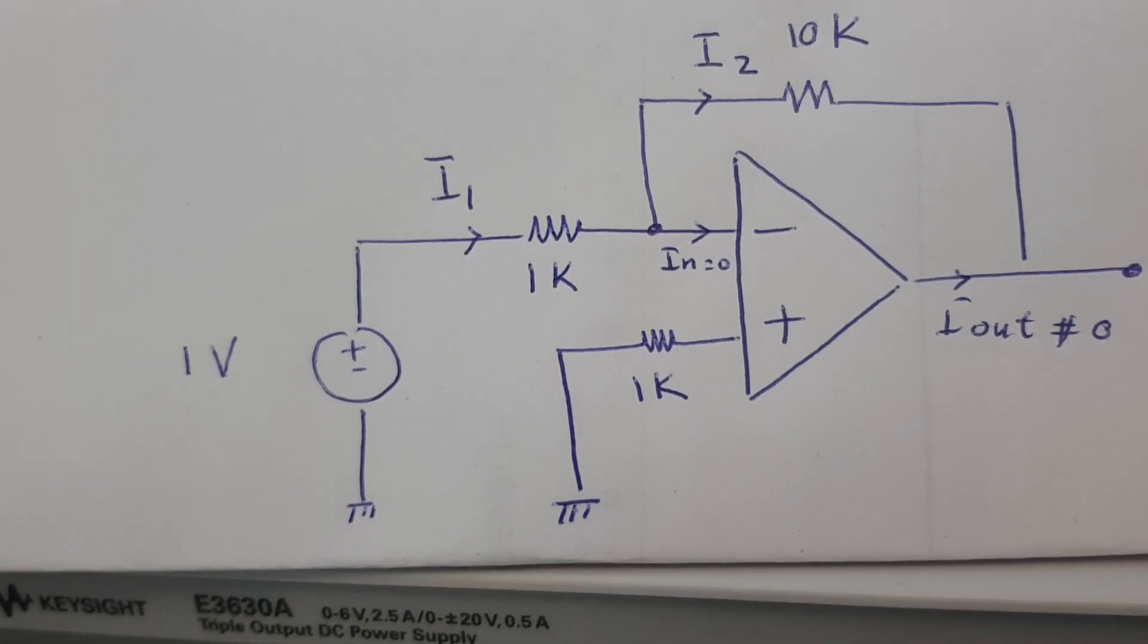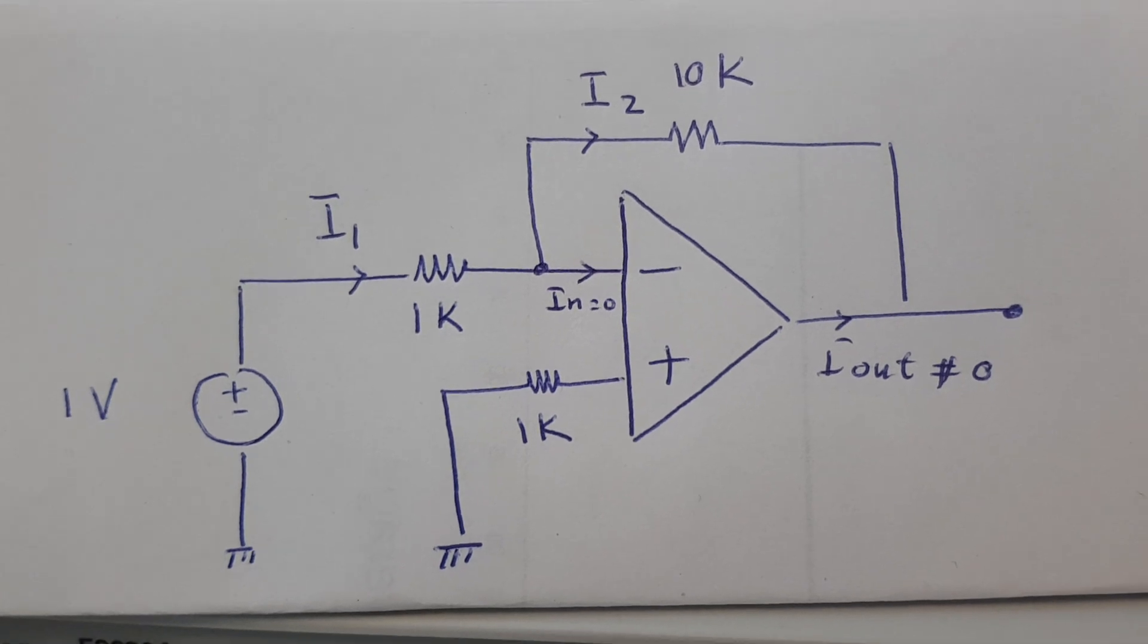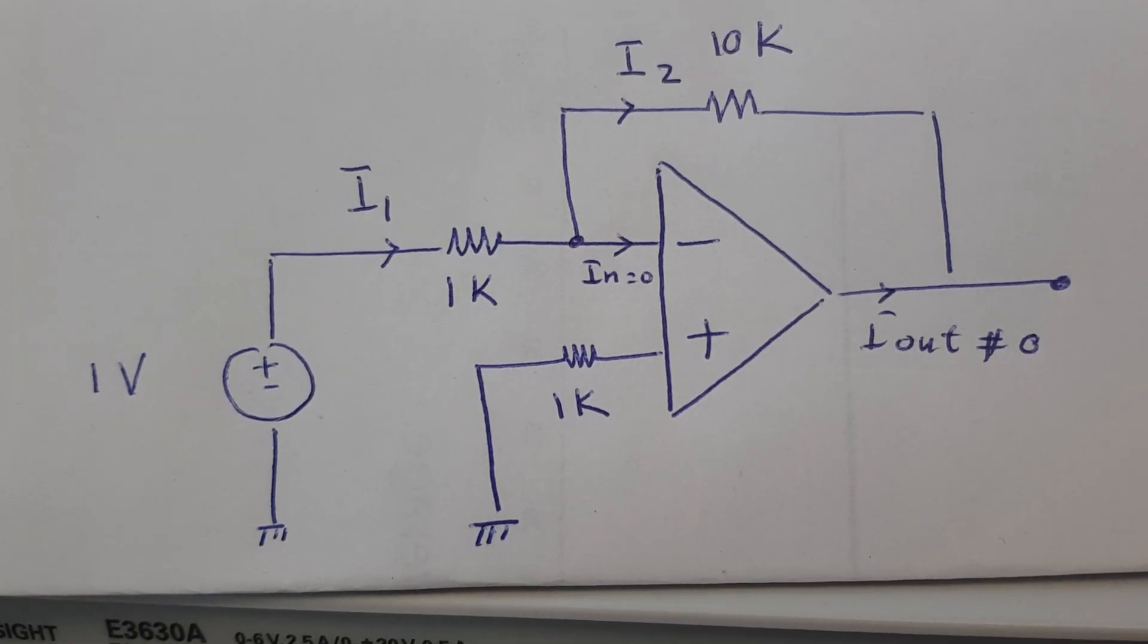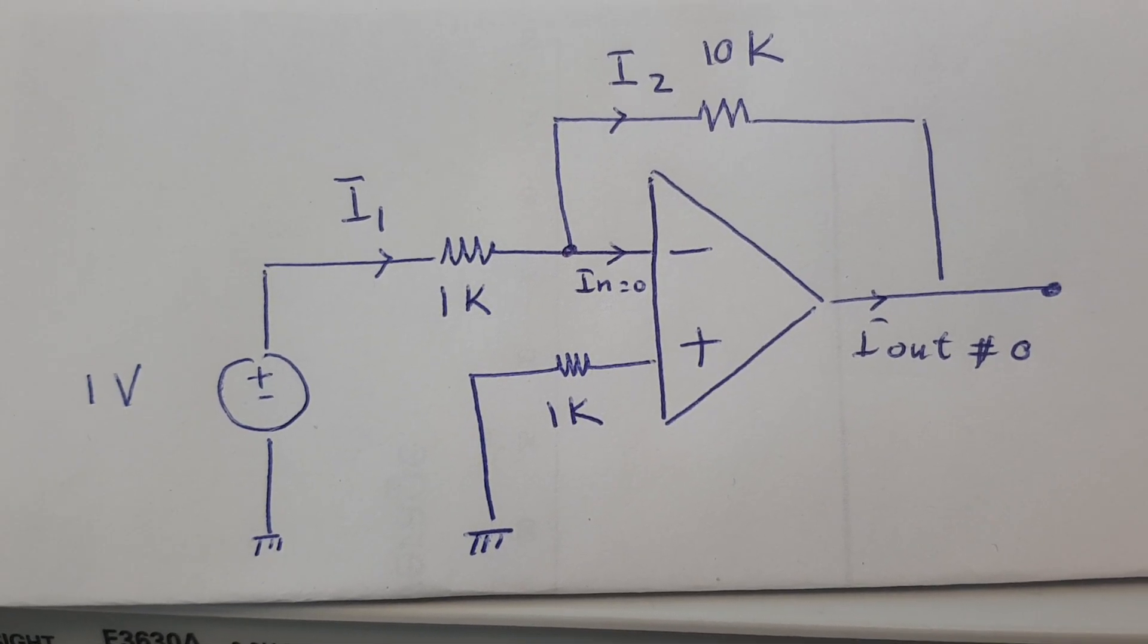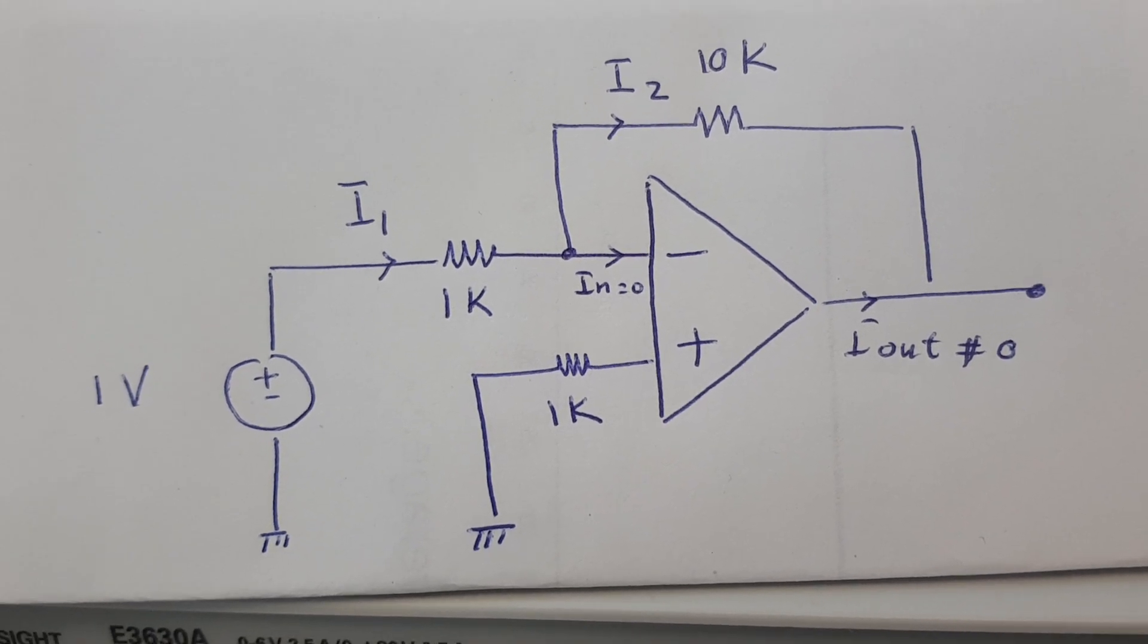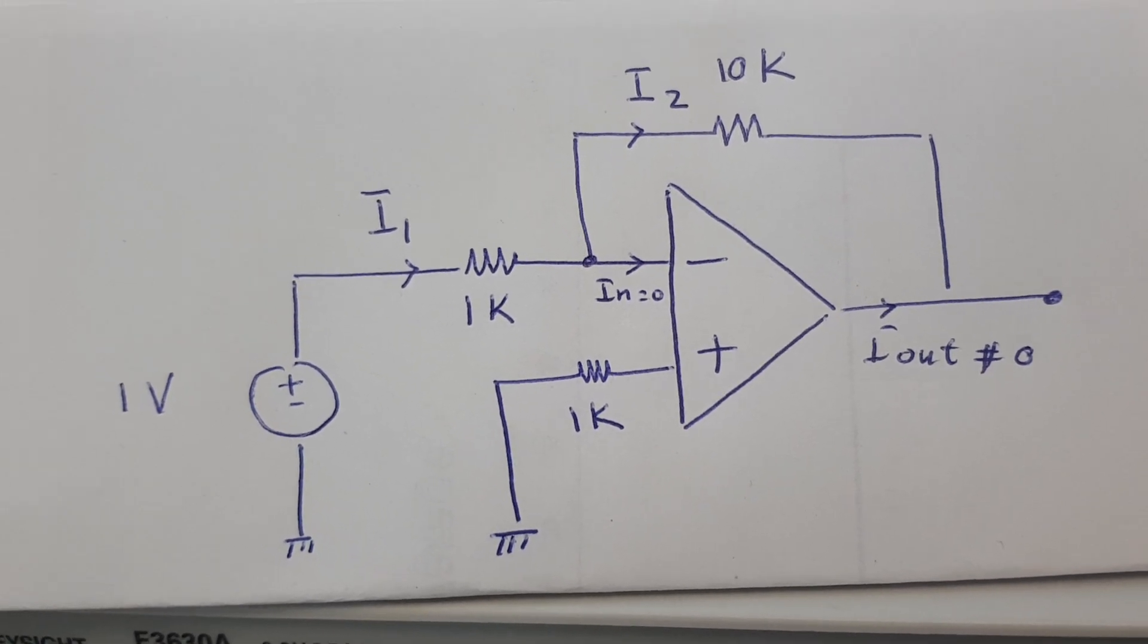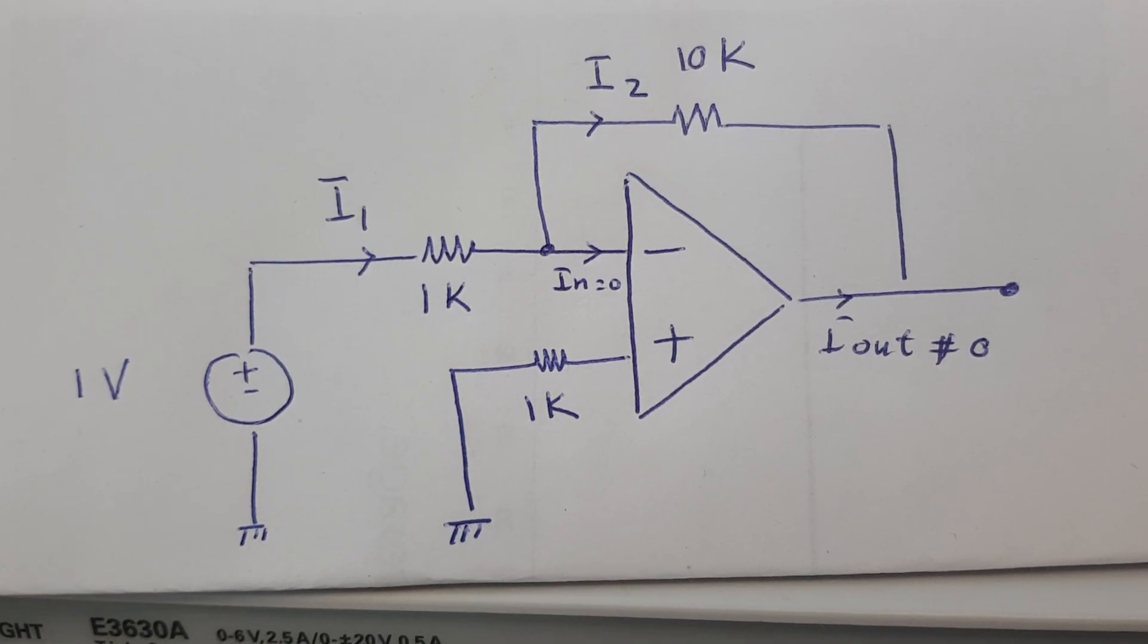Practically, the op-amp does receive a small current. But when we analyze the op-amp, we assume ideal behavior because this makes the analysis much easier. And since the current is small relative to the actual currents in the circuit, it can be ignored without affecting much the accuracy of my calculation.